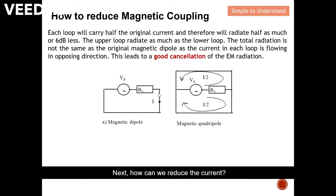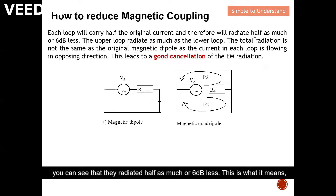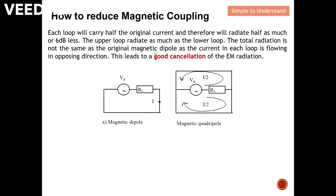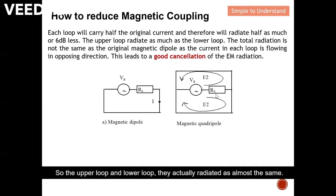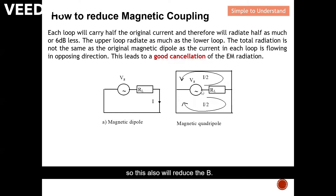Next, how can we reduce the current? You can see this is the original signal carrying the full current. But if we do a mirror image here, the current actually reduces by half. The key thing is when the current reduces by half, the radiation is half as much — or 6 dB less. The upper loop and lower loop each radiate almost the same, but the total combined radiation is not the same as the original magnetic dipole. The combined effect from these two means there is some cancellation, which also reduces B. This is another method to reduce the magnetic coupling.